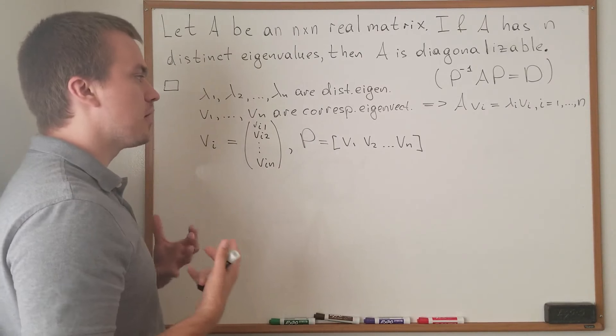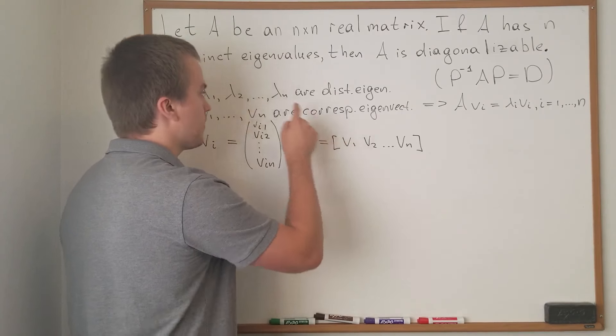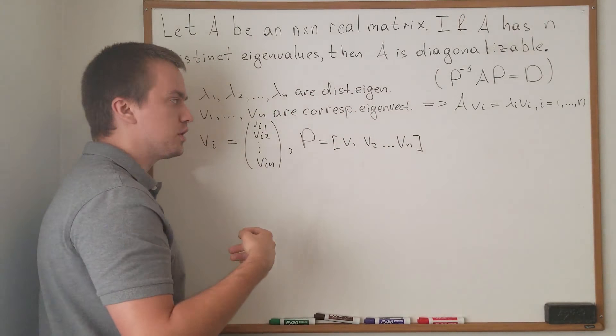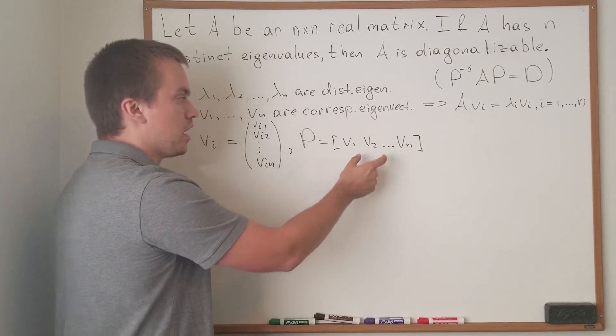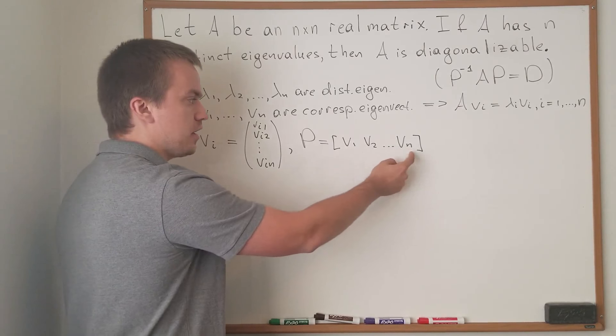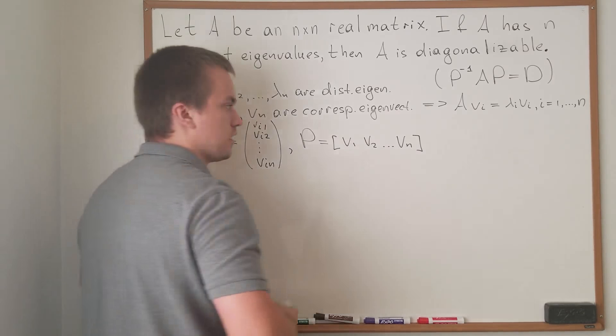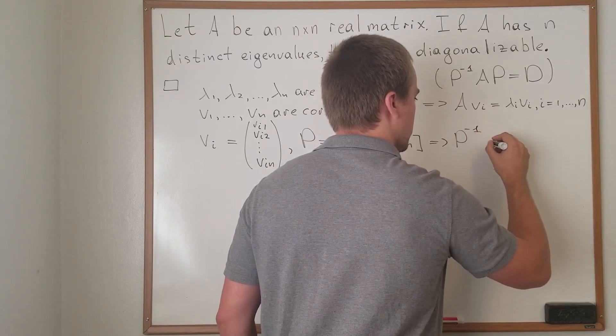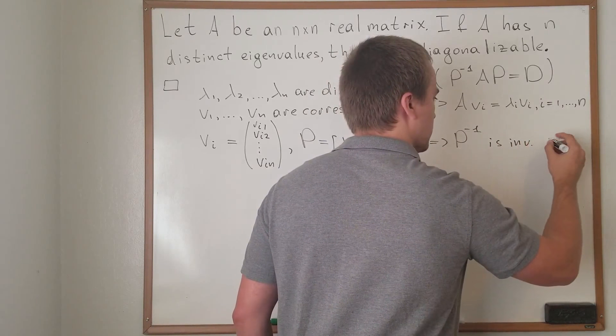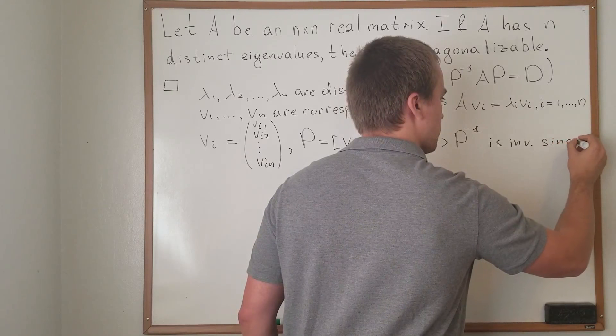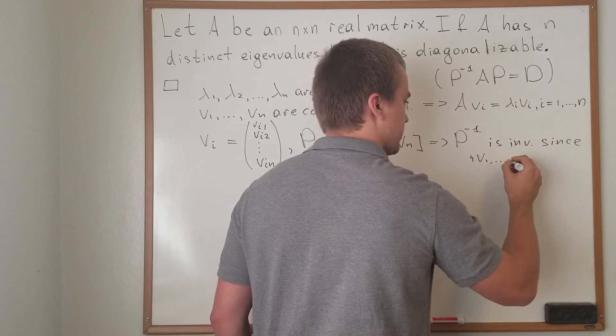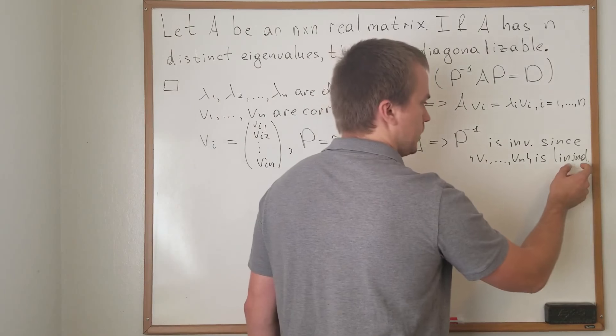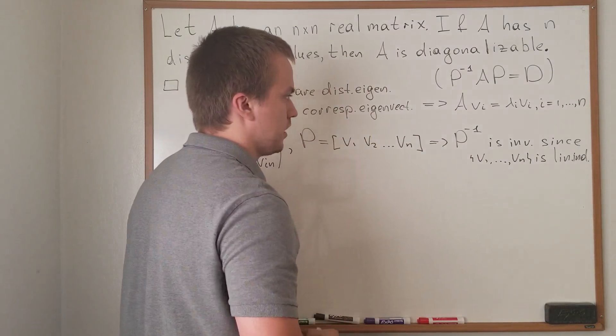What we can say about this matrix: since we have n distinct eigenvalues and we've proved in another video, we know that the matrix is invertible. Why? Because this set of eigenvectors is linearly independent. So from here follows that P inverse is invertible. Since V1 and Vn is linearly independent, so the eigenvectors are linearly independent, P inverse exists.